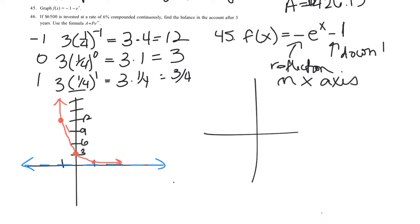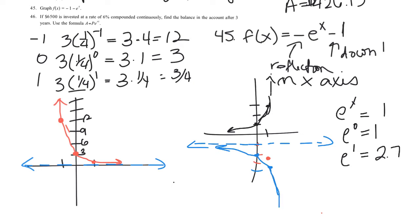So again, when I plug in 0 to my parent graph E to the X, I get 1. E to the 0 equals 1. When I plug in 1, E is 2.718, so that's going to give me a pretty good idea. So 1 and 1, 2.7. So my parent graph is this black one. Now I'm going to reflect it on the X-axis, so it should go down. Let me do this in red. Reflect it, and then this point would be down here, and then everything is going to get moved down 1. So here we are, and our asymptote is going to be at negative 1.